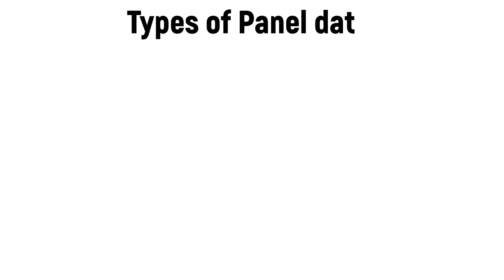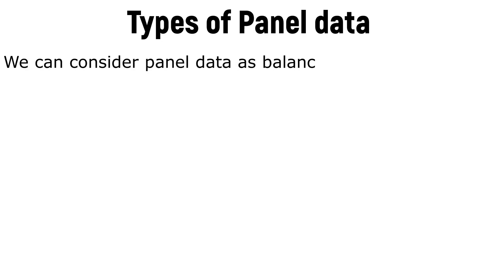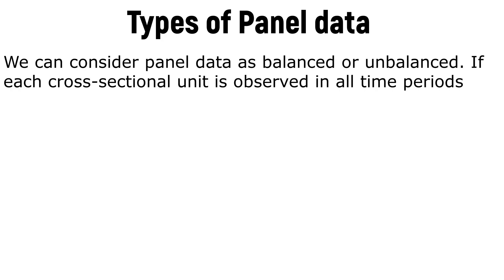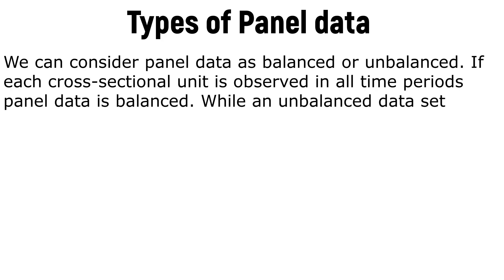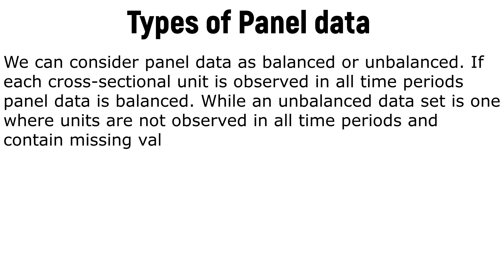Types of panel data: We can consider panel data as balanced or unbalanced. If each cross-sectional unit is observed in all time periods, panel data is balanced. An unbalanced data set is one where units are not observed in all time periods and contain missing values.